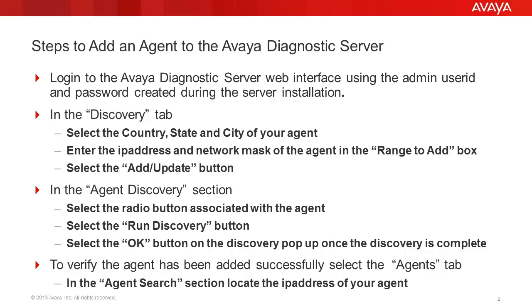Next, we'll enter the IP address and network mask of the agent in the Range to Add box, then select the Add Update button. In the Agent Discovery section of the window, we will select the radio button associated with the agent, then select the Run Discover button.